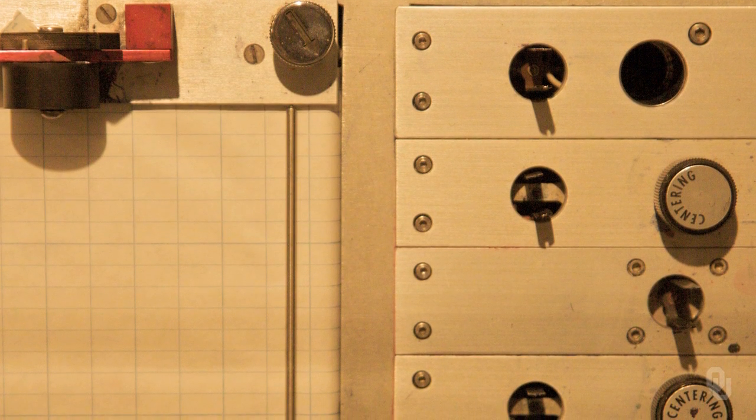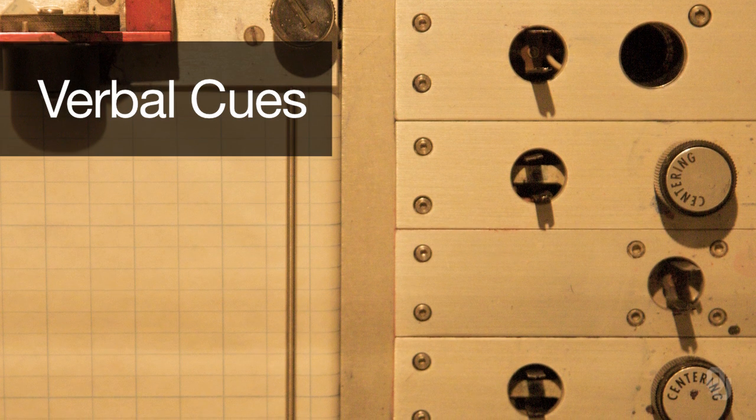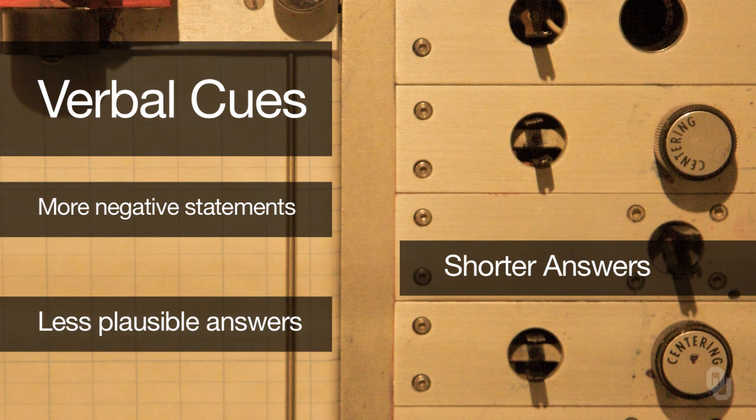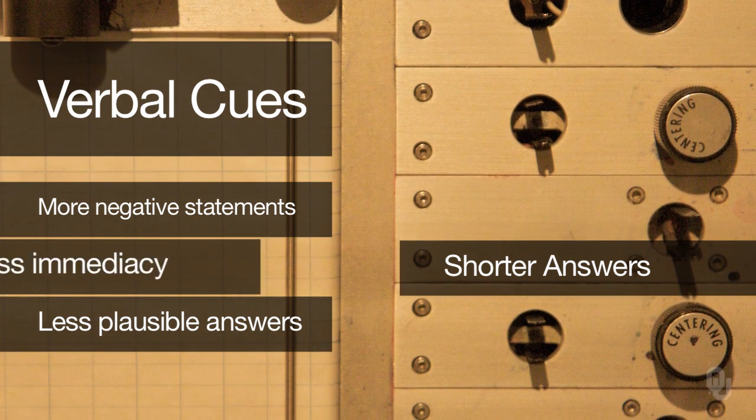Some of the other cues are actually verbal, which we'll discuss in another module. These include how long the answer is, the use of negative statements, and less plausibility. There's also an overall pattern of less immediacy, which combines verbal and nonverbal cues to show that deceivers just don't feel as close to the interviewer as people who are telling the truth. Of all the nonverbal cues available, people believe 11 of them are related to deception, but they're right about just one — the higher pitched voice. People are looking for more fidgeting, eye blinks, less consistent eye gaze, and other unreliable cues. In other words, when it comes to nonverbal cues, people are just looking for the wrong ones.